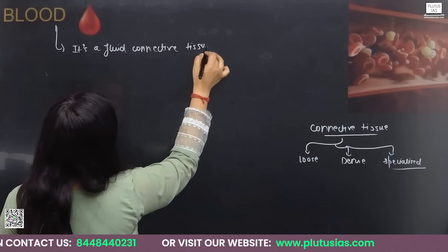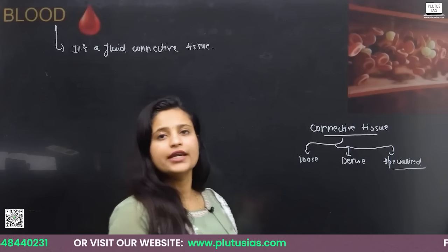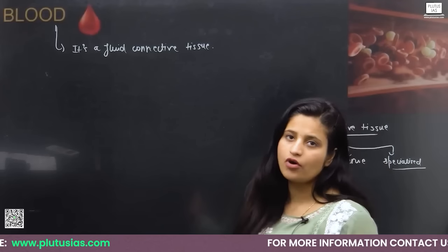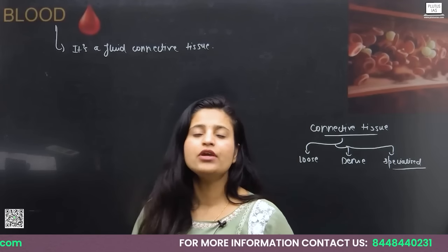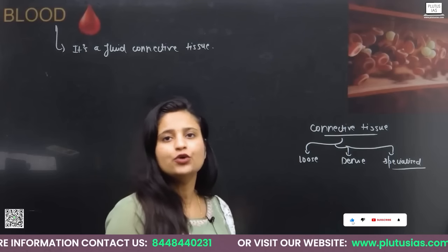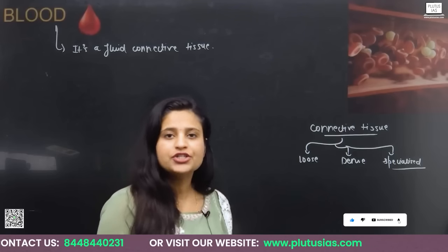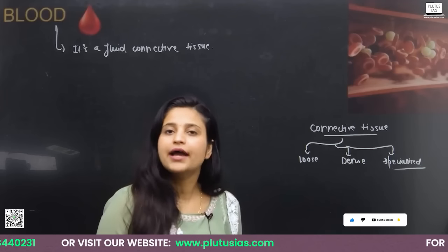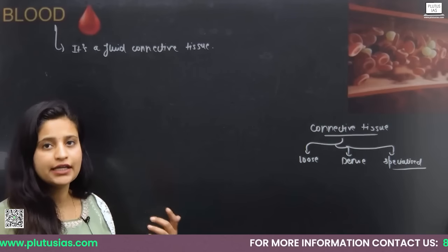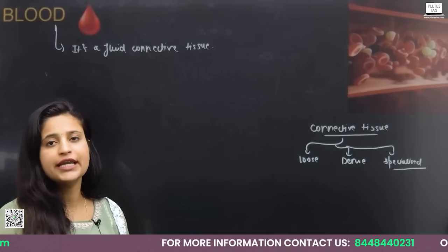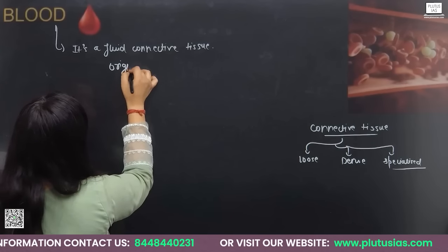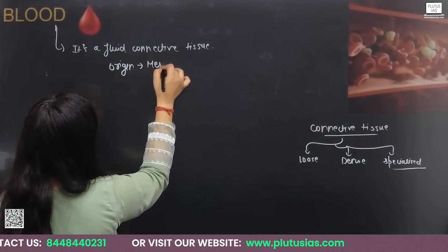The next question is: what is the origin of connective tissue? Every cell and every tissue has an origin. When we were in embryonic development, the inner cell mass is differentiated into three germ layers — ectoderm, endoderm, and mesoderm. The cells of connective tissue have been originated from the germ layer of mesoderm. So the origin is mesoderm.